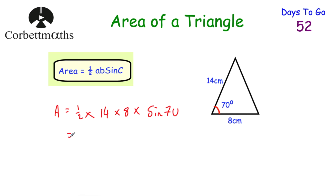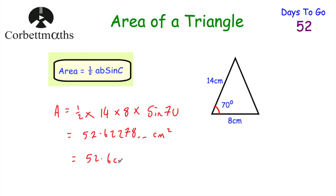If we do a half multiplied by 14 multiplied by 8 multiplied by the sine of 70, it'll give us the area of this triangle. Our answer is 52.6227... centimetres squared. Rounding to one decimal place, the area of this triangle is 52.6 centimetres squared. So this formula, half AB sine C, can help us find the area of any triangle as long as we know the lengths of two sides and the angle in between them.